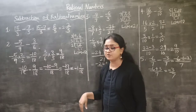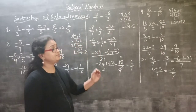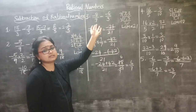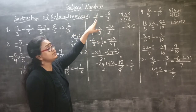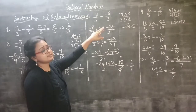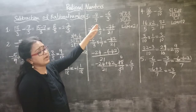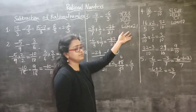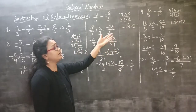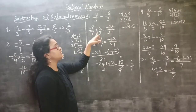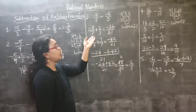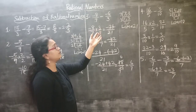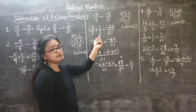Let's see the third example. Here both numbers are negative rational numbers: minus 8 by 7 minus minus 6 by 3. Both numbers have different denominators, so we need to find the LCM. The LCM of 7 and 3 is 21. For minus 8 by 7, I multiply by 3 by 3 because 7 times 3 gives 21. So minus 8 times 3 is minus 24, and 7 times 3 is 21, giving minus 24 by 21.